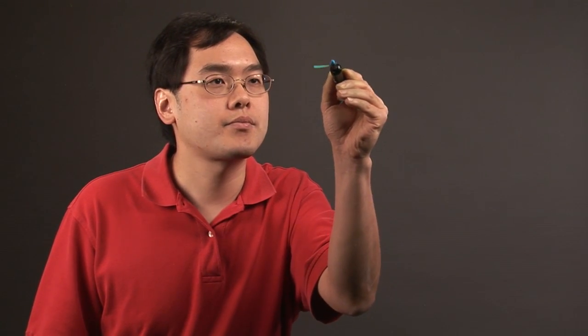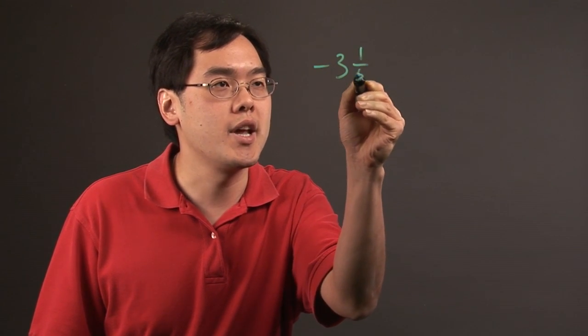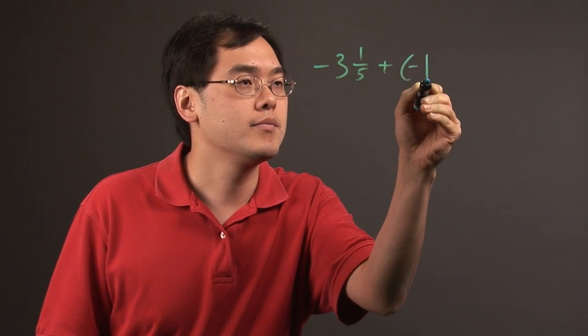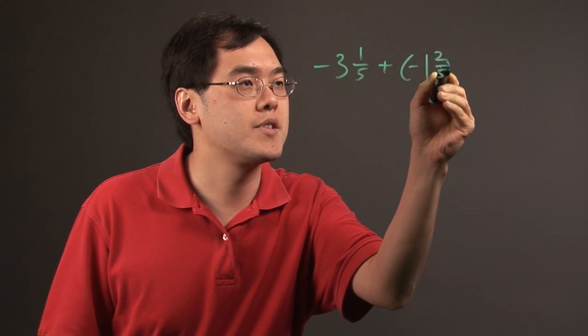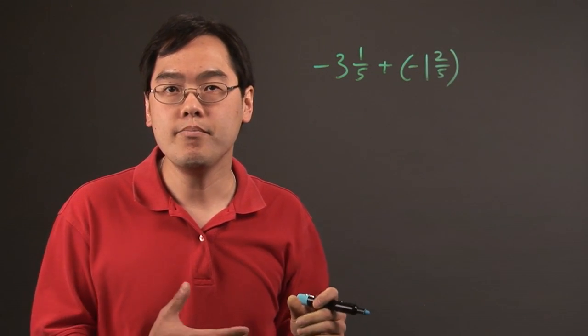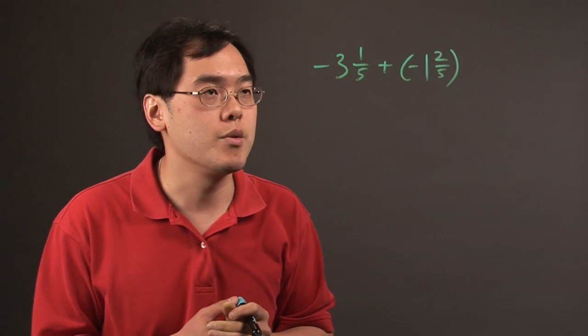So when you're adding negative mixed numbers, let's just say negative three-fifths plus negative one and two-fifths, the idea here is that when you're adding two negative numbers, you're making the number even more negative than what you were doing before.